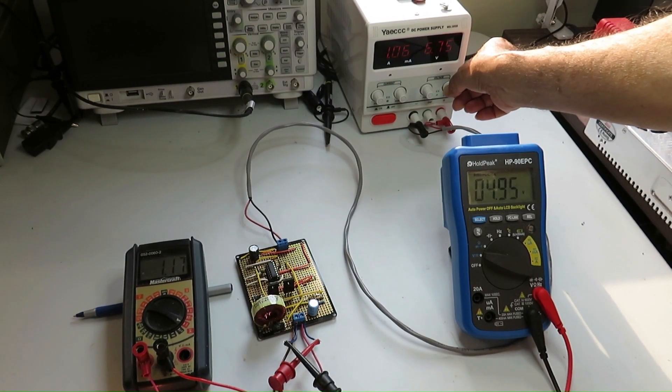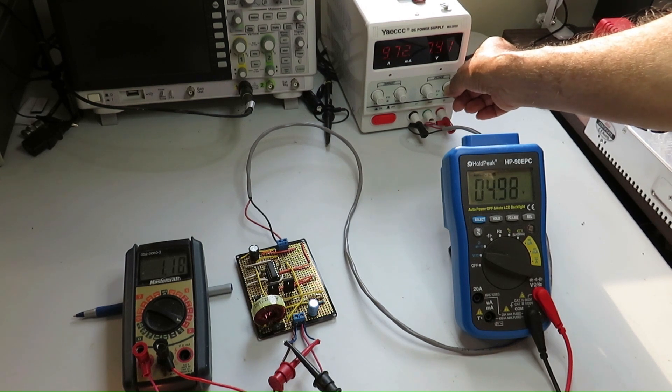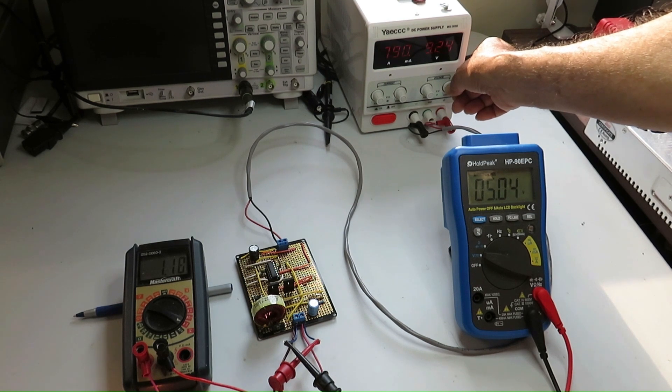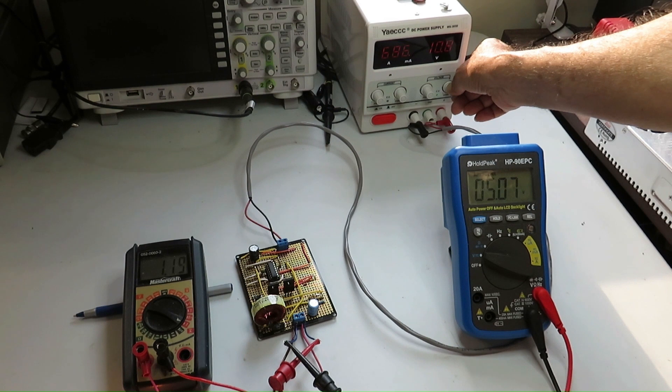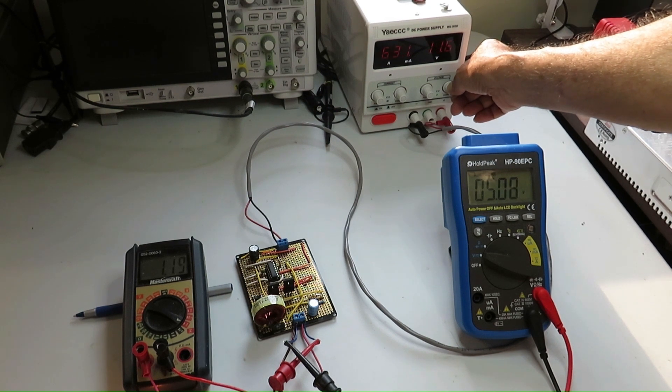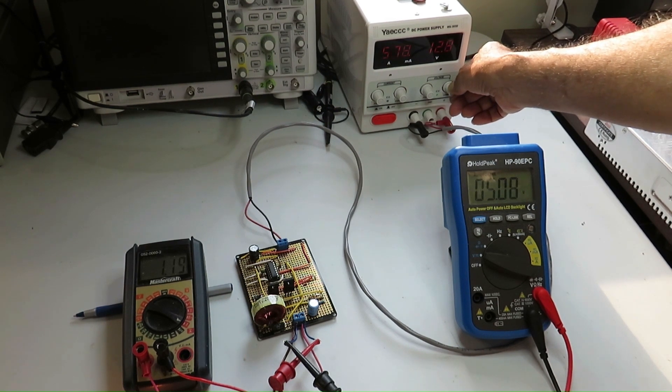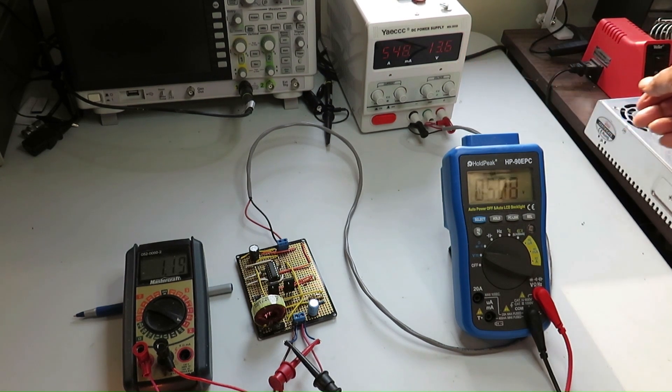Now I am testing the DC to DC converter. Input voltage is increased and output voltage is measured. You can see that as the input voltage goes up, but the output it remains almost flat at 5 volts.